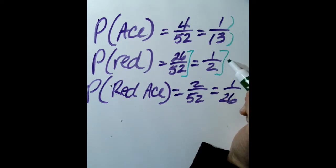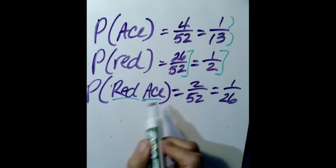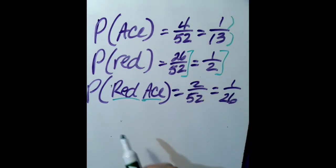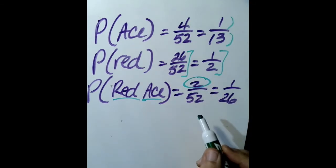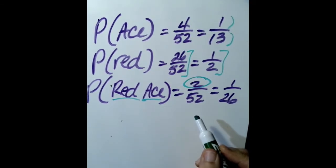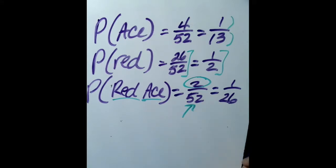The probability of finding a red ace: there are two red aces — the ace of hearts and the ace of diamonds — out of 52 cards altogether, so that simplifies to one out of 26.